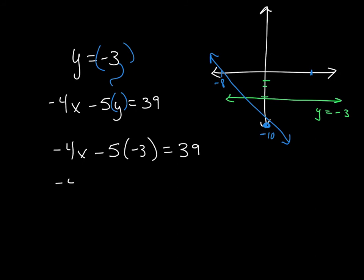So negative 4x, a negative and a negative give me a positive 15 is equal to 39. Subtract 15 from both sides. And you are left with negative 4x is equal to 24.